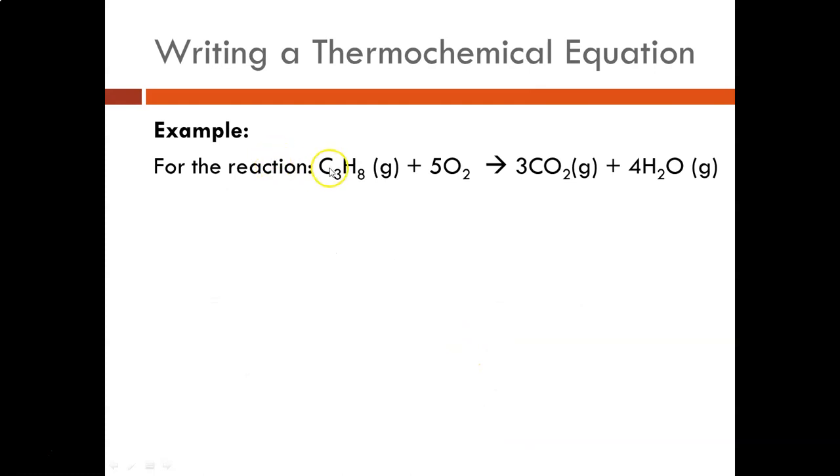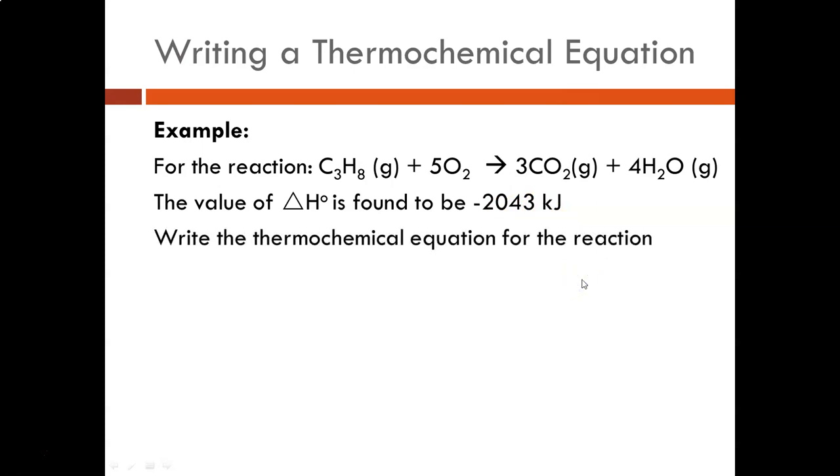Now example 2, this is the combustion of propane to produce carbon dioxide and water. The value of delta H, and you can look these up in tables, is a negative number. So that means that this is an exothermic reaction.